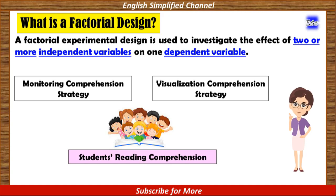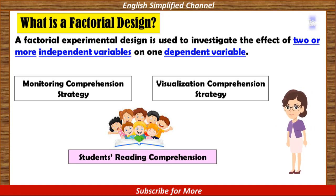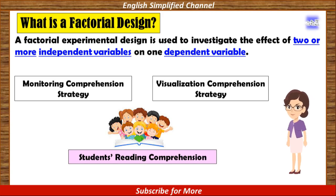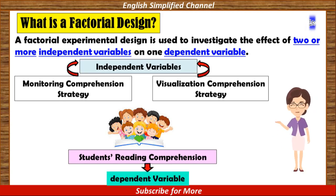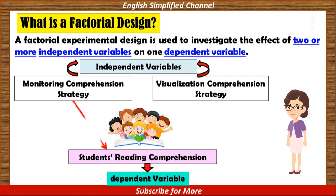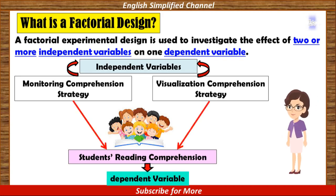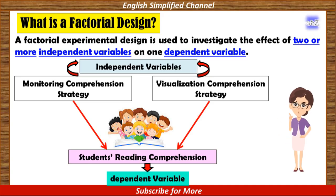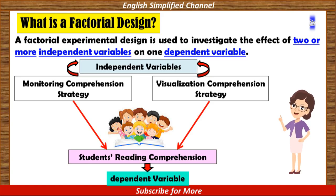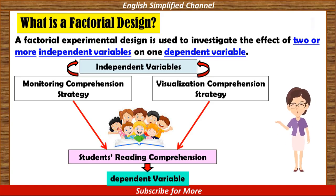See this example. I want to find out whether monitoring comprehension strategy and visualization comprehension strategy have effects on students' reading comprehension. In this example I have two independent variables: monitoring comprehension strategy and visualization comprehension strategy. And only one dependent variable, that is students' reading comprehension.